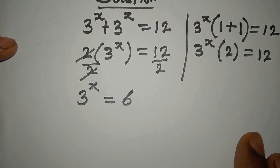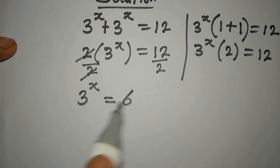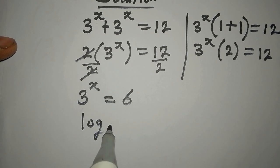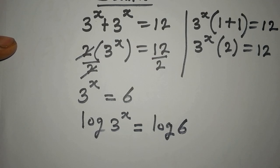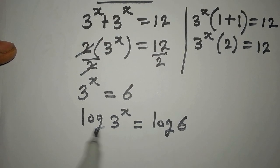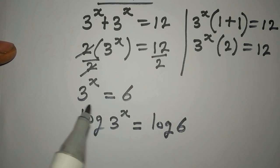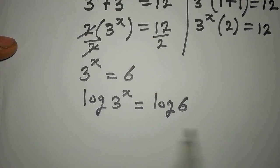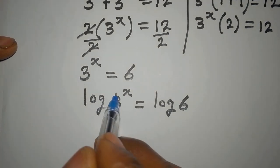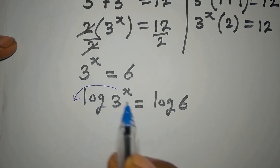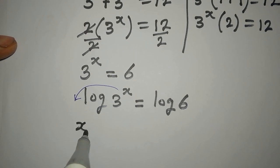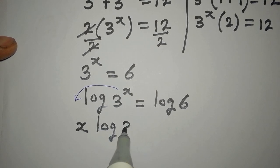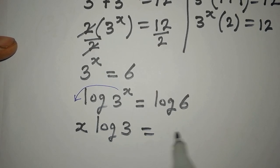From here, we take the log of both sides, so log 3 to the power of x equals log 6. We are taking log of both sides because we cannot express 6 with base 3 directly. There is a law that says the power comes back and multiplies the whole log, so we have x times log 3 equals log 6.